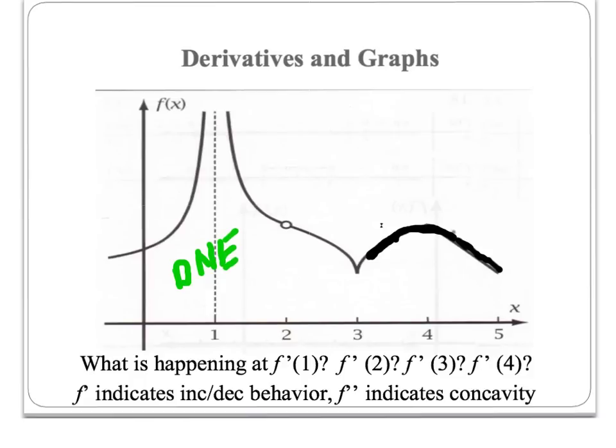The same thing happens at f prime of 2, because there's a hole there. Remember, a derivative measures the slope of the tangent line. Because of the hole, the tangent line has nothing to attach to on the curve, so there is no tangent line. At f prime of 2, it would also be DNE.